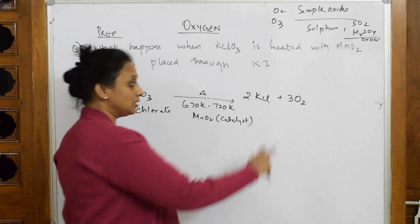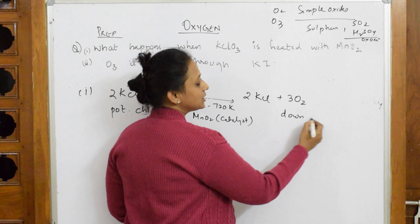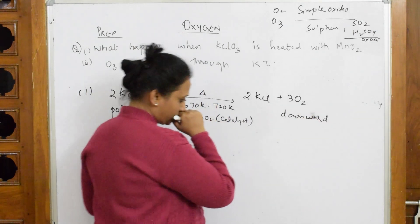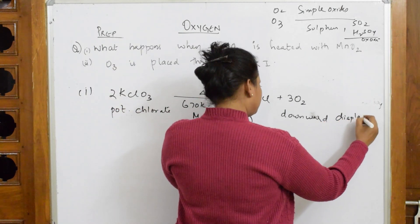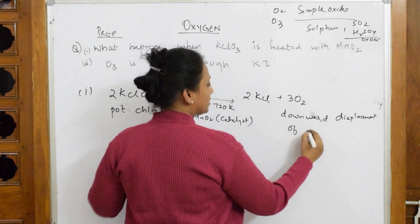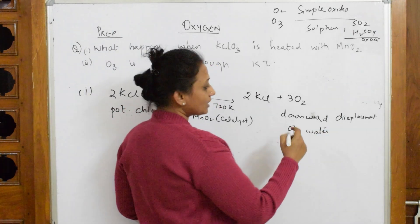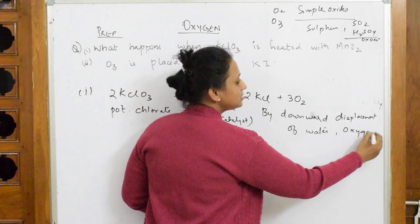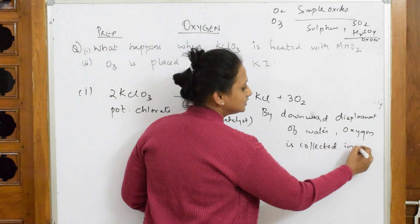Now important: how is this oxygen collected? This is the main thing here. Oxygen is collected by a procedure called downward displacement of water. Oxygen is collected in a trough.